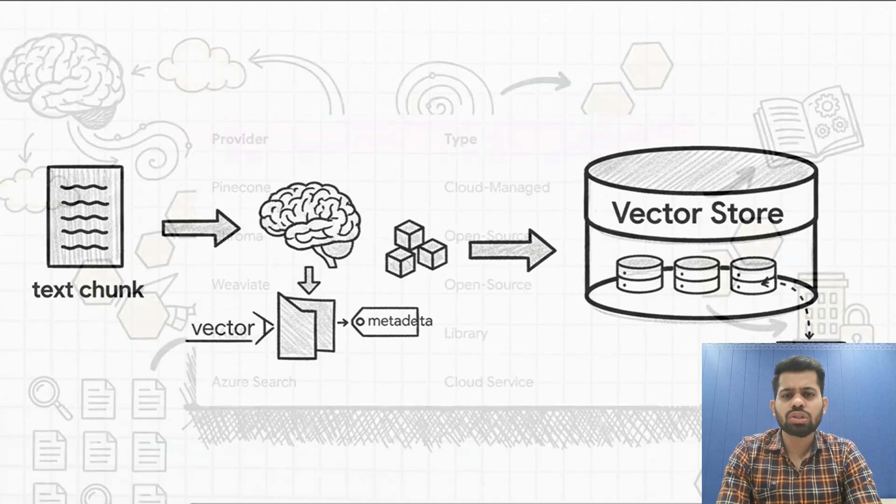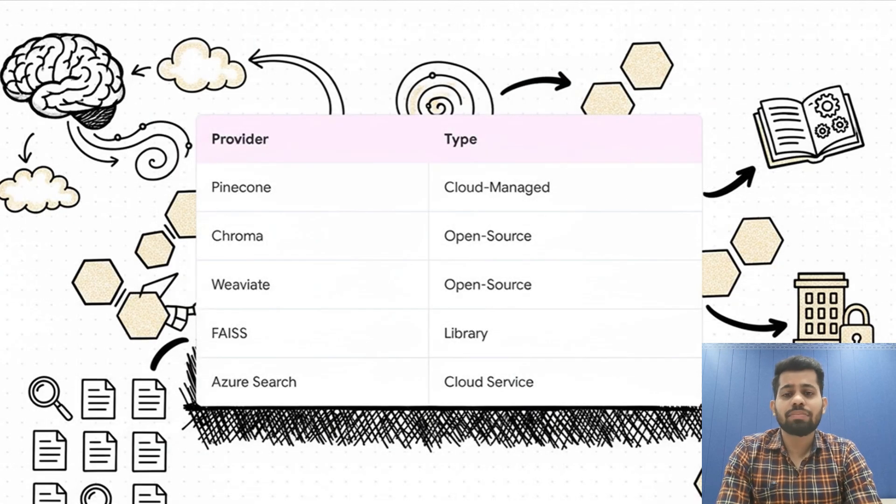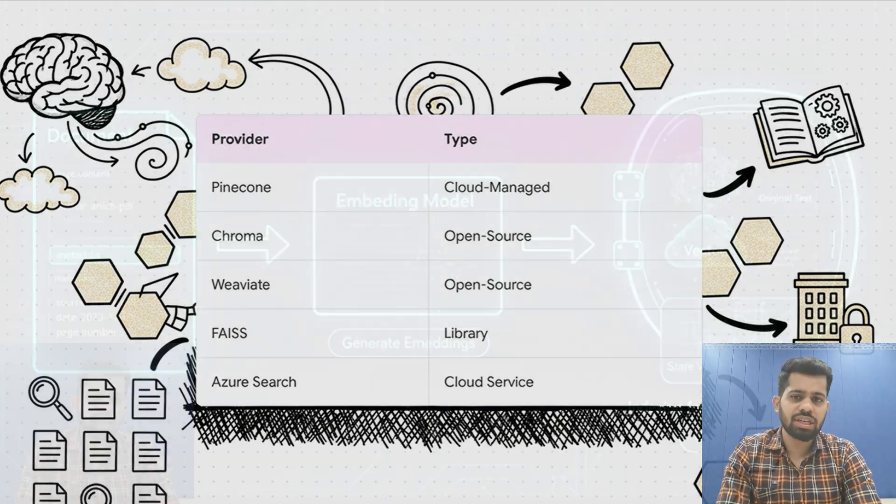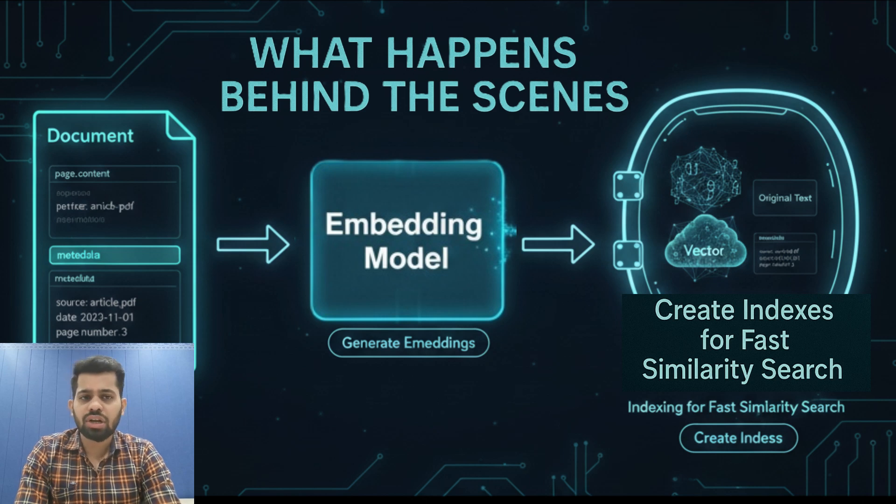Vector stores are specialized databases designed for vector search. They are optimized for finding similar vectors quickly, even with millions of entries, and rapid similarity searching makes them the long-term memory system of our application. Popular vector stores that LangChain integrates with include Pinecone, Weaviate, Chroma, FAISS, or Azure Search and many more. But what happens behind the scenes? When you add a document to a vector store, it takes each document's text, generates embeddings using your embedding model, stores the vector along with the original text and metadata, and creates indexes for fast similarity search.